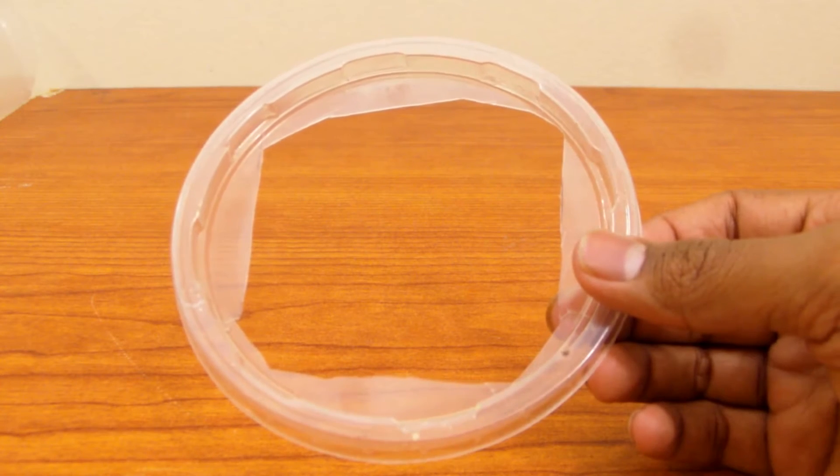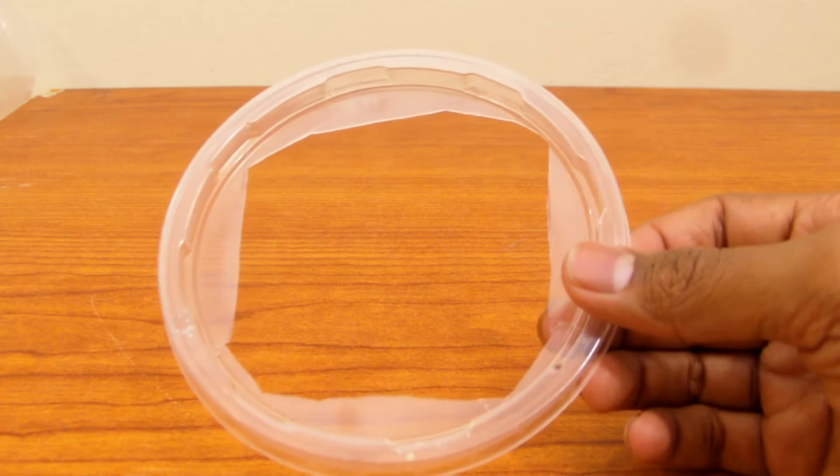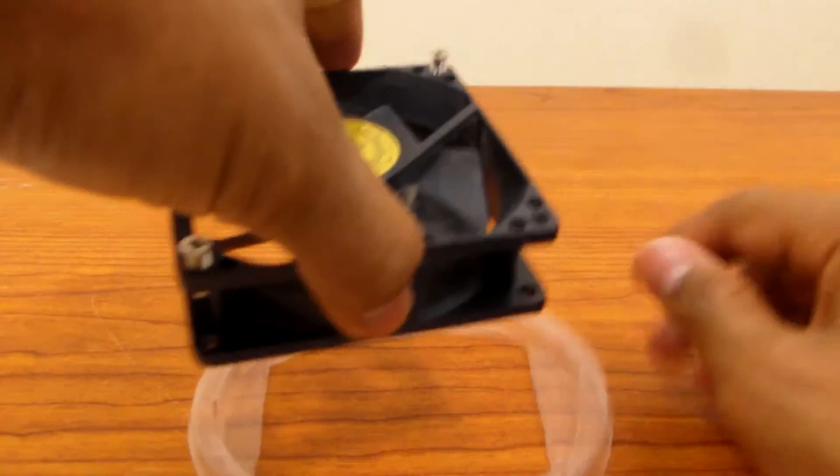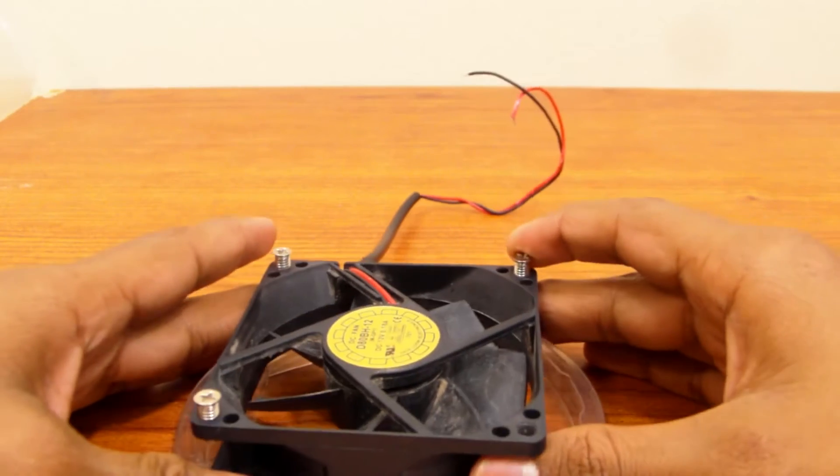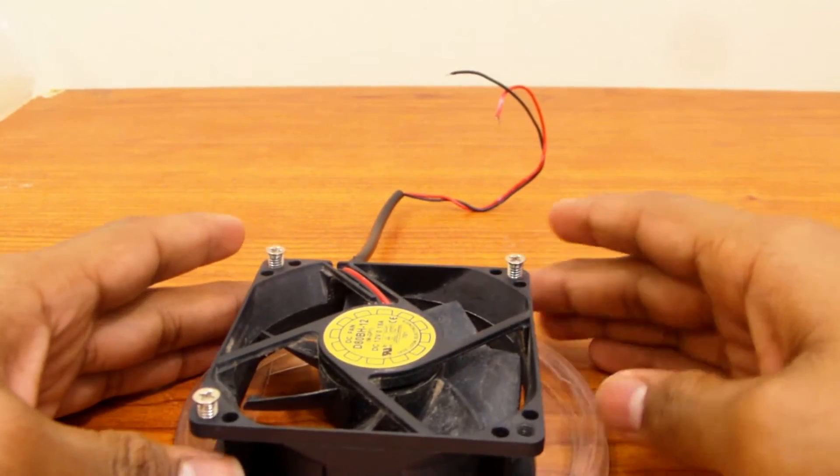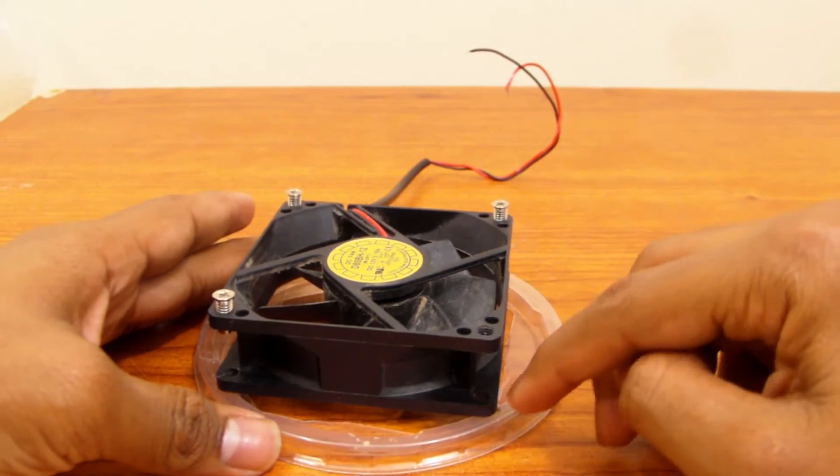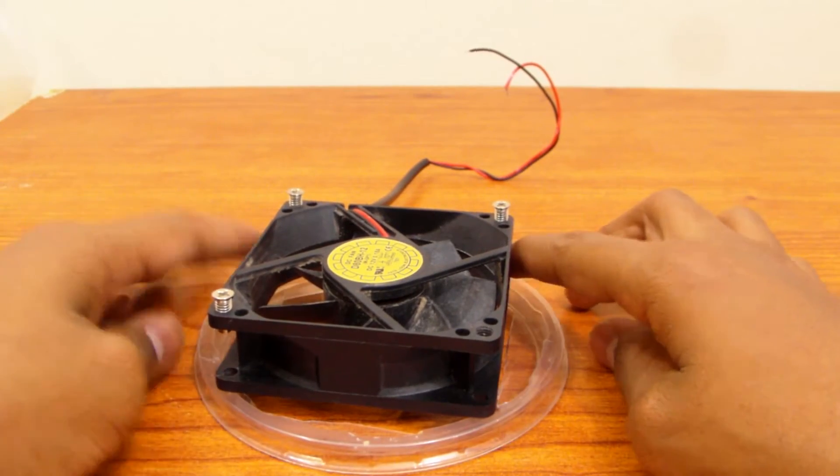So I cut the lid as close as I can to the shape of the fan and now I'm just going to take the fan and put it like this. Since this fan is a bit too big for this lid, I'm going to glue these corners with hot glue.